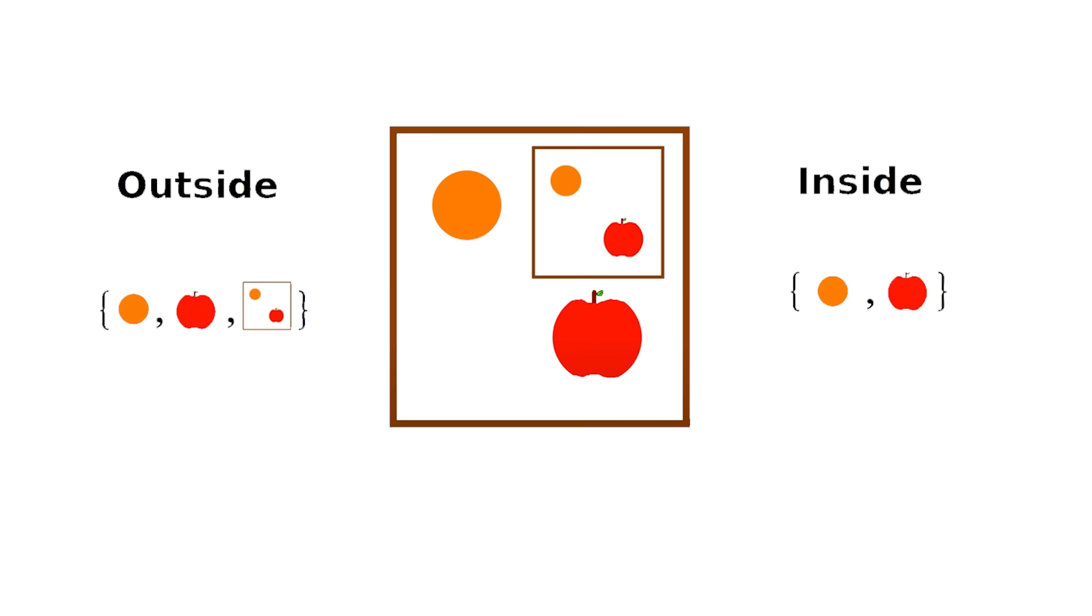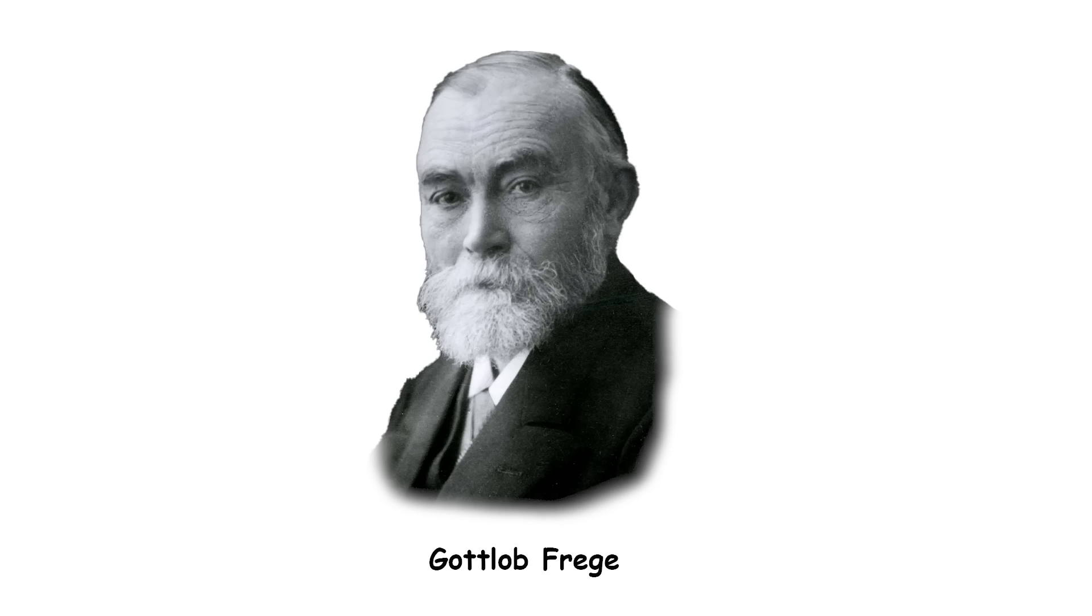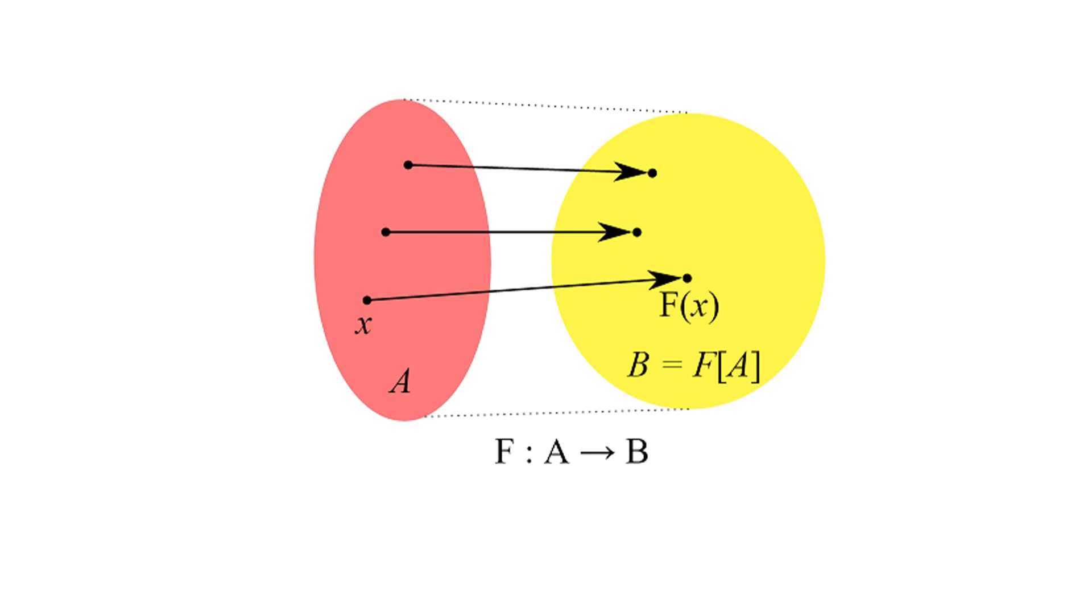It basically shows that if you try to make a set of all sets, you run into problems. It's like trying to define a word using the word itself in the definition. Things get all tangled up. To fix this, mathematicians had to put limits on Frege's rule. They came up with new rules, like the Zermelo-Fraenkel system, which says you can't make sets bigger than ones you already have. This way, you avoid those weird situations, like trying to make a set of all sets.